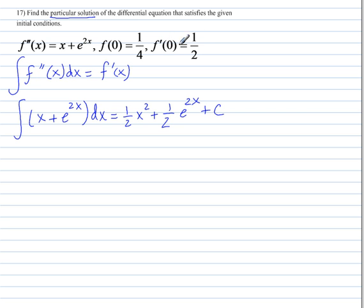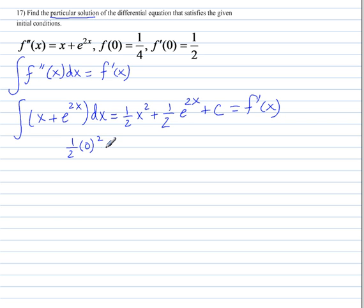We're going to use the initial condition that F prime of 0 is ½ in order to solve for C in F prime, because this expression is F prime of X. So we know F prime of 0 is ½, that means when X is 0: ½ times 0 squared, plus ½E to the 2 times 0, plus C equals F prime of 0, which is ½.